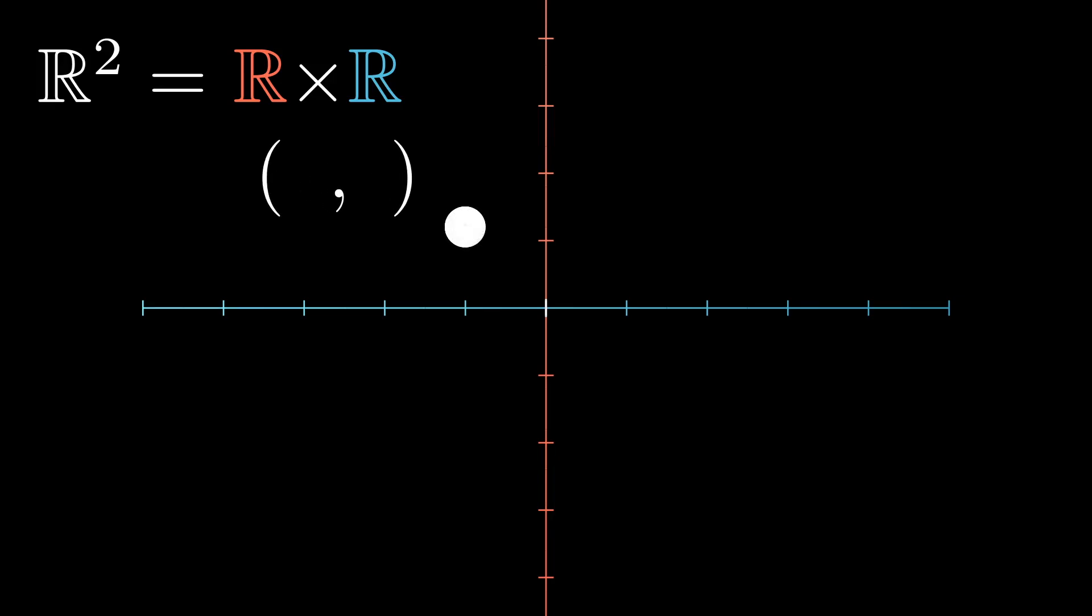The Cartesian product of R with itself is the plane R2. We usually think of it as a set of points with two coordinates, x and y. And we probably spent a good deal of our mathematical career thinking about relationships between x and y that result in curves.